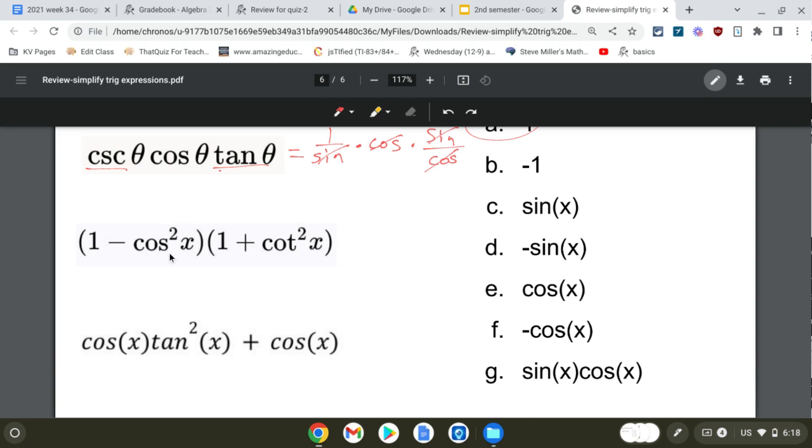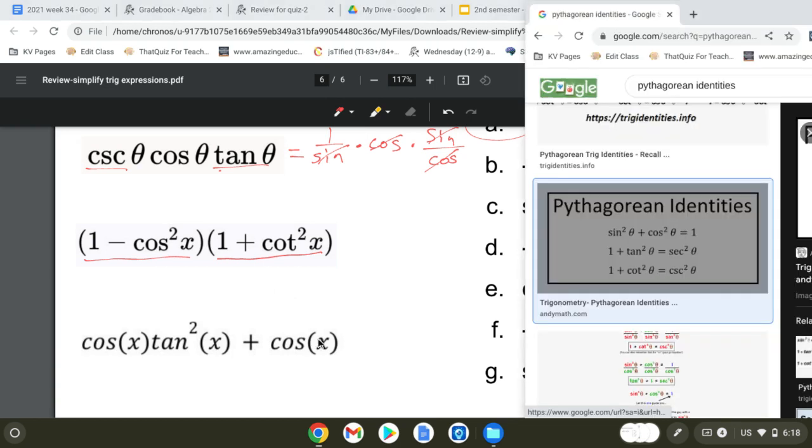For this one, I'm kind of tempted to multiply it out, but I know I have an identity here. This is just equal to sine squared. This is probably equal to something. 1 plus cotangent squared. Let me see if I can replace that.